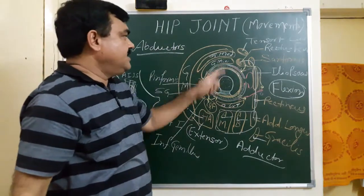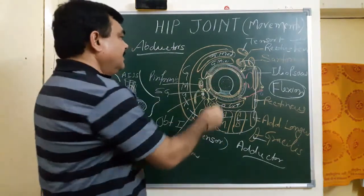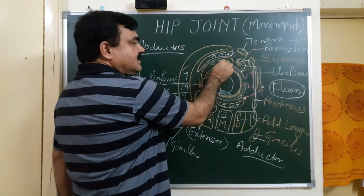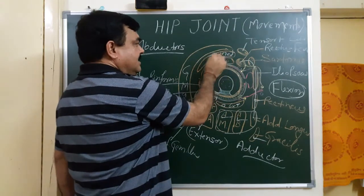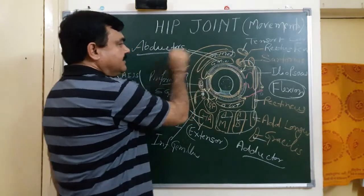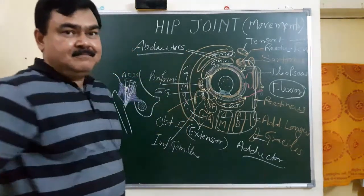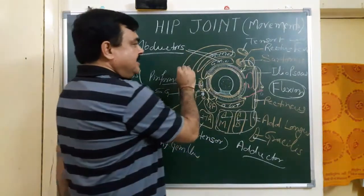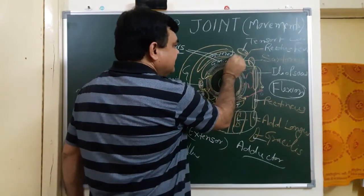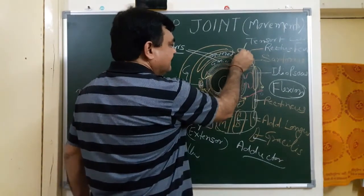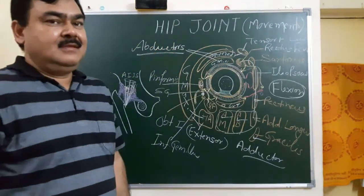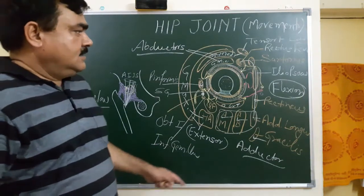The abductors of the hip joint are gluteus minimus and gluteus medius, which are the powerful abductors. They are assisted by the tensor fasciae latae.